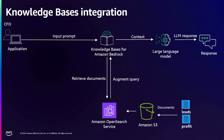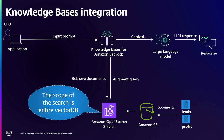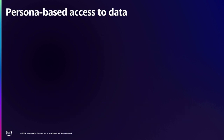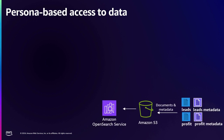Now, if the same CFO asks questions about leads or marketing-related documents, the same workflow gets triggered and he can still get answers from marketing documents. This is because the scope of the search is the entire vector database. What if we don't want the CFO to access any marketing-related data? This is when we implement persona-based access control.